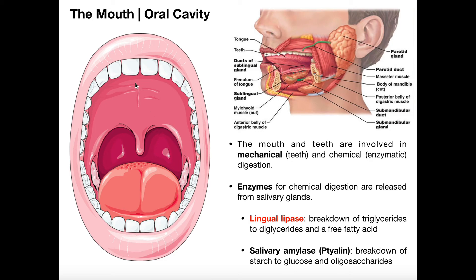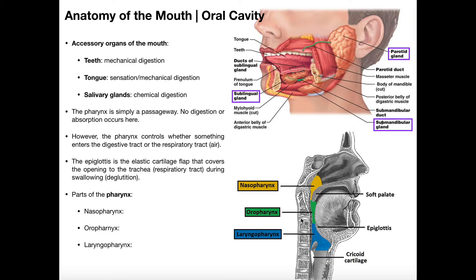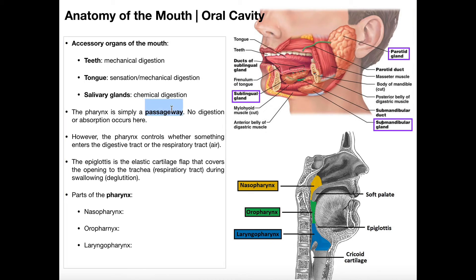What I'm going to do now is briefly talk about the pharynx, and then we're going to save the esophagus for the following video. In order to swallow the food, we have to move that food from the oral cavity into the pharynx, and then it'll move down to the esophagus. Now the pharynx is really just a passageway — there is no digestion in the pharynx, there is no absorption. It is just a passageway.